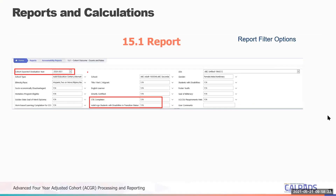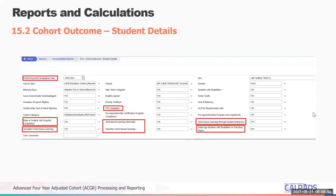Here's the 15.1, showing that you can select future years or the current year, and the CTE completer and the adult age student with disabilities and transition status filter that have been added. And here's the 15.2 with the CTE completer and all the work-based learning choices that have been added.